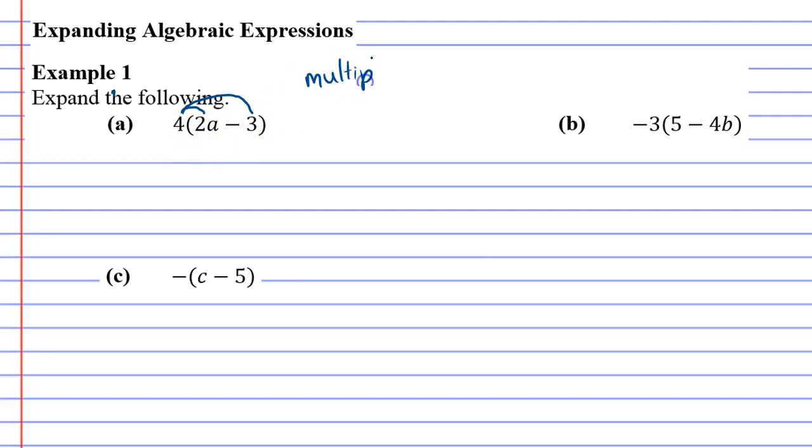This is the trick. 4 times 2a is 8a. 4 times 3 is 12. Notice that we put a minus between it.